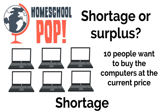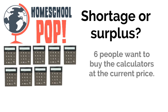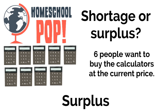They need to make sure they have more computers to sell so there's no longer a shortage. Next: an office store has nine calculators for sale, and there are six people who want to buy them at the current price. Nine calculators, six buyers — that's a surplus. There are too many calculators to sell. The store might need to lower the price so more people are willing to buy, and there would no longer be a surplus.